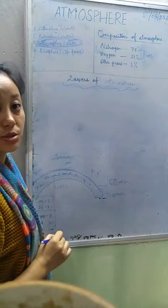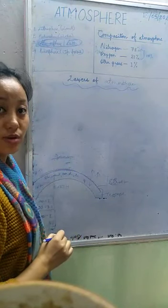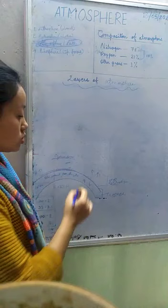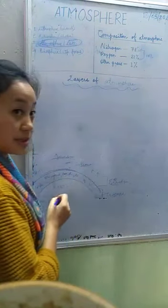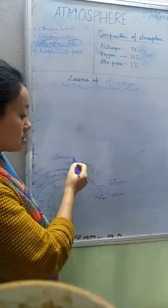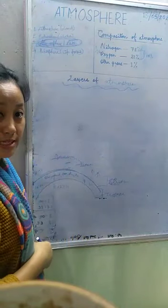And here ozone layer is also present in the stratosphere. Ozone layer, as we all know, it protects or it prevents the earth from the harmful UV rays. So this layer is also known as protective layer. Why? Because ozone layer is present here. That is the reason why it is also called as protective layer.